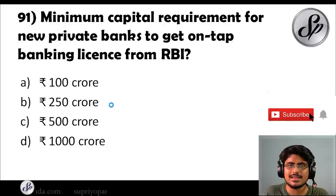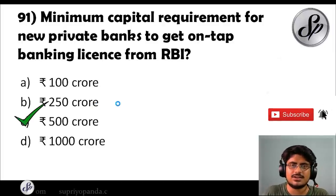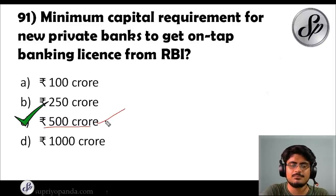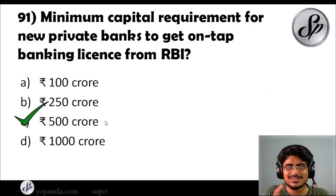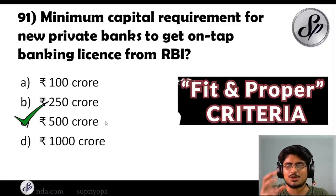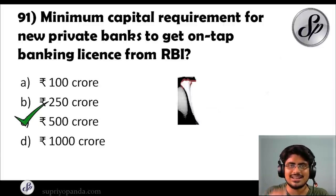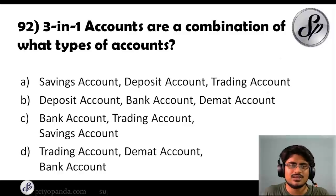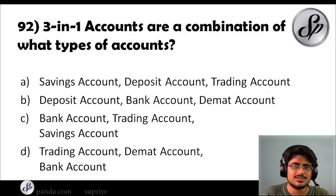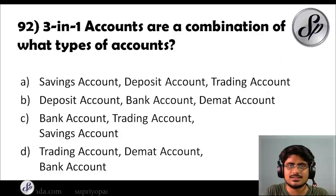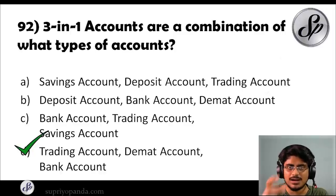Question ninety-one: what is the minimum capital requirement for new private banks to get an on-tap banking license from the RBI? The answer is 500 crore rupees. You also need to satisfy fit-and-proper criteria — there are many different conditions to meet before you can open your own private bank. Question ninety-two: three-in-one accounts are a combination of what type of accounts? The answer is trading account, demat account, and bank account.